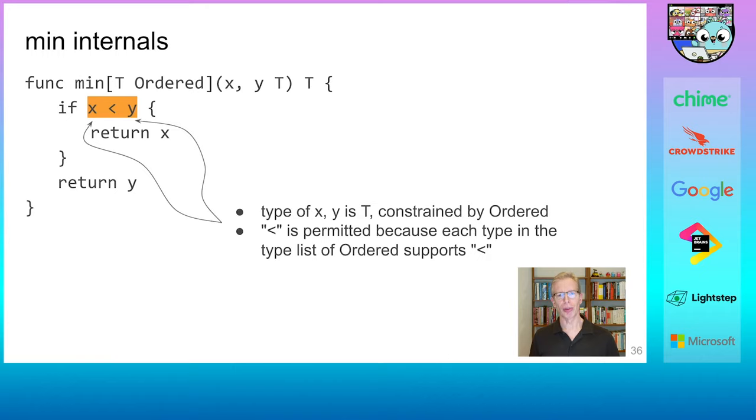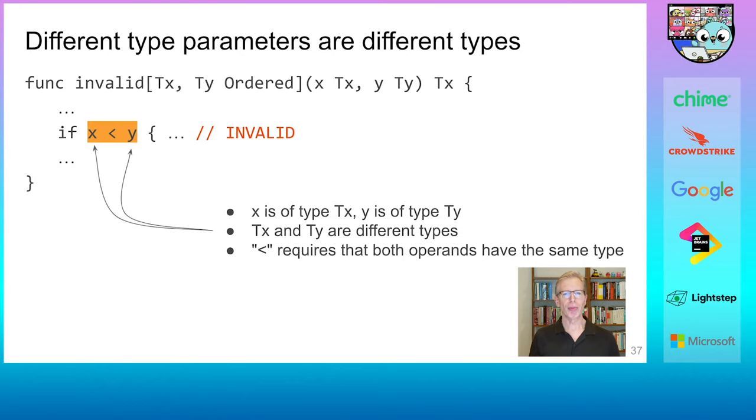Here is a variation that is invalid. As I've mentioned before, the type parameters are real types, and different type parameters are in fact different types, even if they are constrained by the same constraint. And if that seems unintuitive, consider an ordinary parameter list. Given two parameters x and y of the same type, let's say int, we certainly would assume that x and y are different variables. Now in this example, we compare x and y, which have the types tx and ty, both of them constrained by the ordered constraint. And as before, values of type tx and ty both support the less than operator. But the less than operator requires that both operands have the same type, and here they have not. So this code is actually invalid.